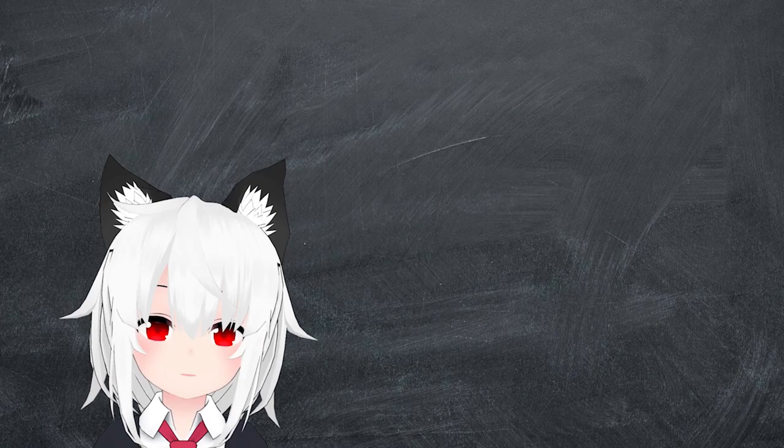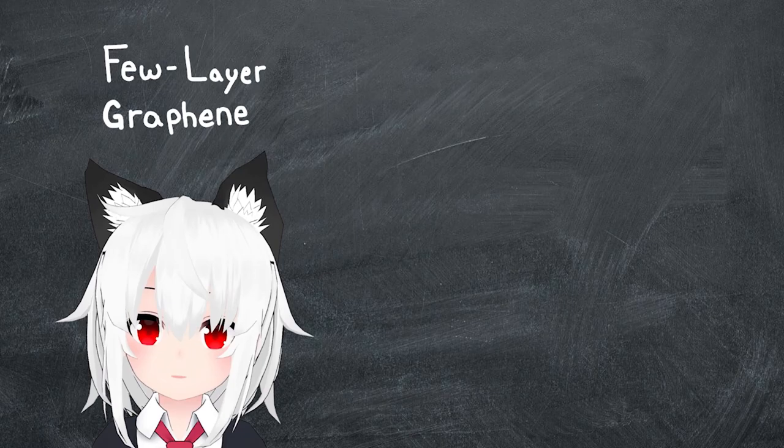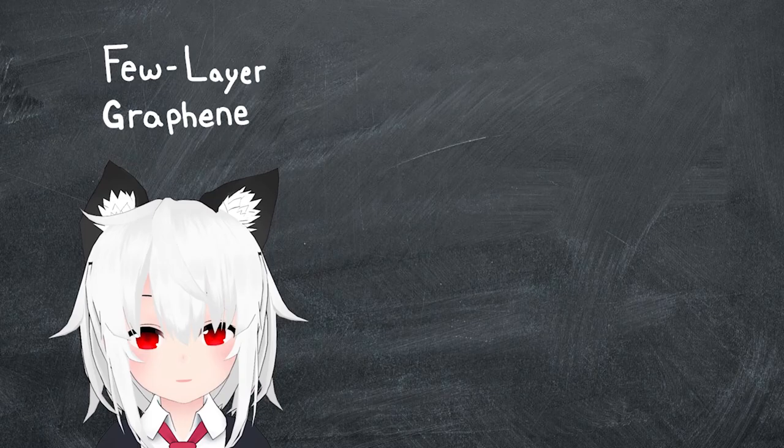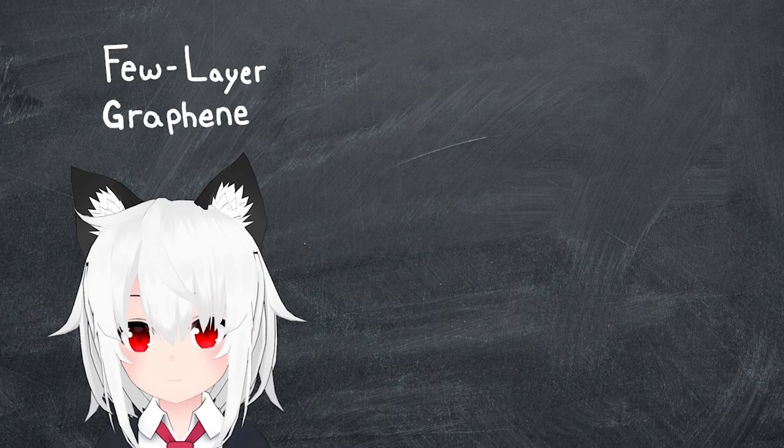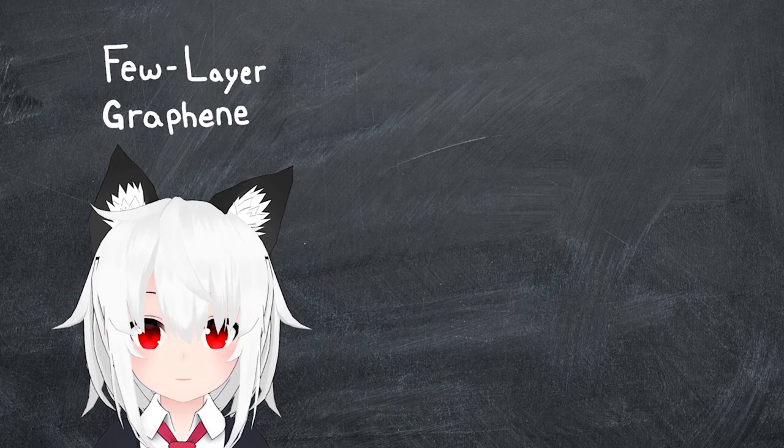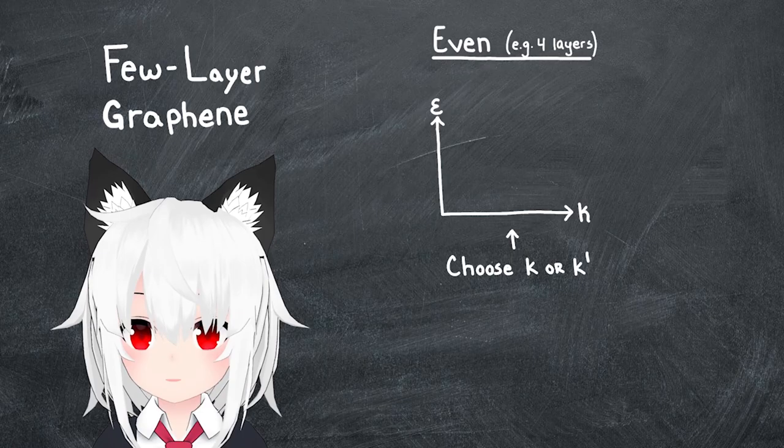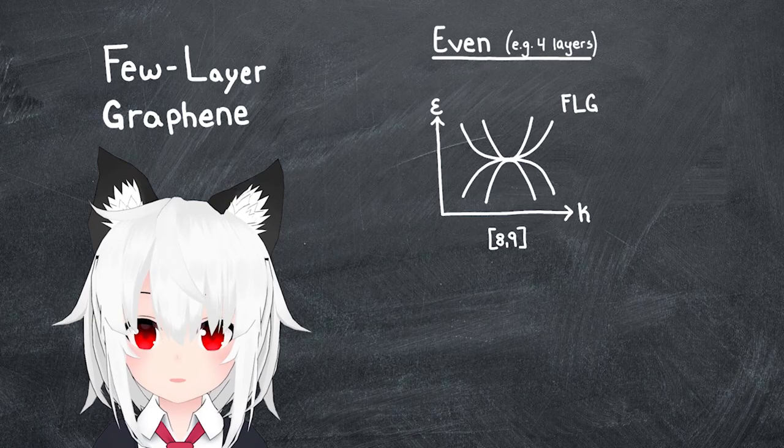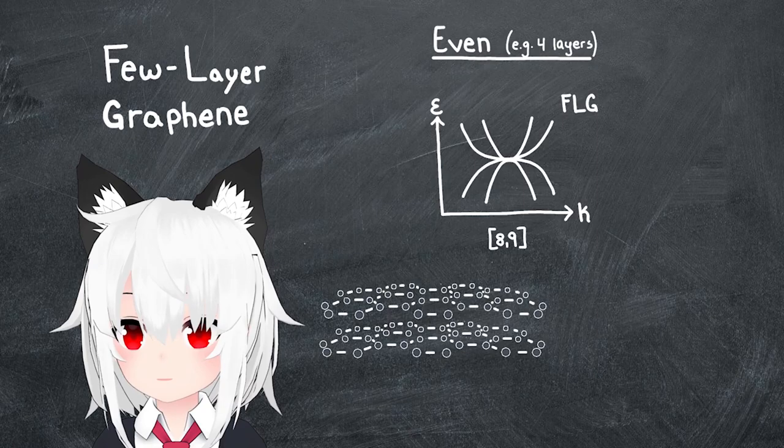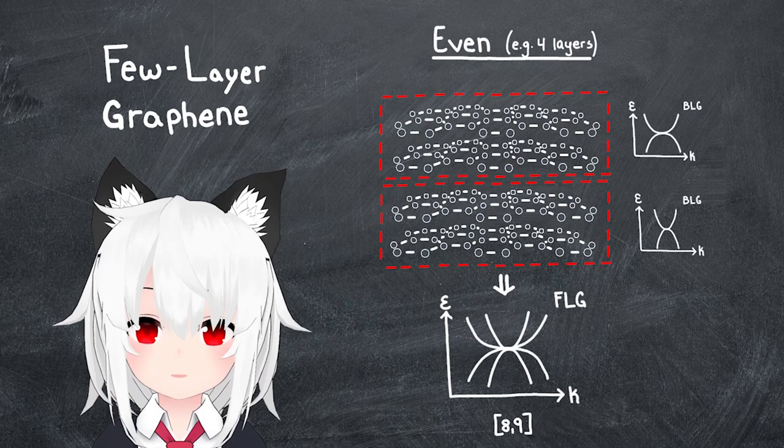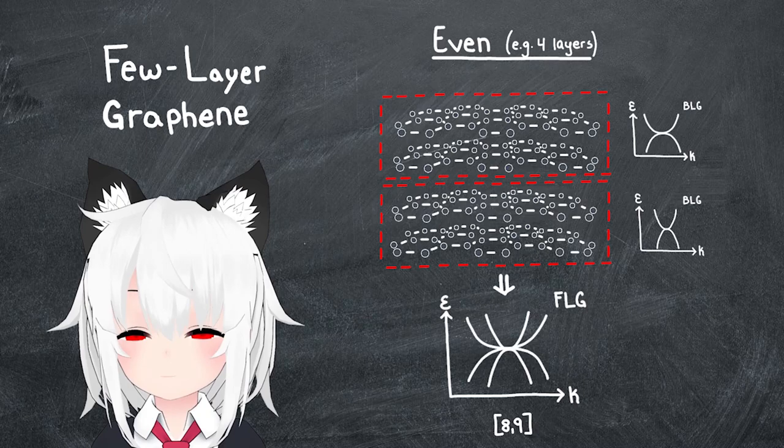But what happens when we go beyond the monolayer and extrapolate to few layer graphene? Well, performing a similar analysis for an arbitrary number of layers can be done, and the result ends up being a straightforward categorization of the material band structure that only depends on the evenness or oddness of the number of layers involved. To be specific, if the number of layers is even, then the band structure at either the K or the K' point can be represented as a collection of quadratically dispersing bands, each with a different character. Incidentally, the band structure of bilayer graphene is also quadratically dispersing, giving rise to a picture of few layer graphene as nothing more than a collection of a whole lot of bilayer subsystems all stacked on top of each other, at least if the number of layers is even.